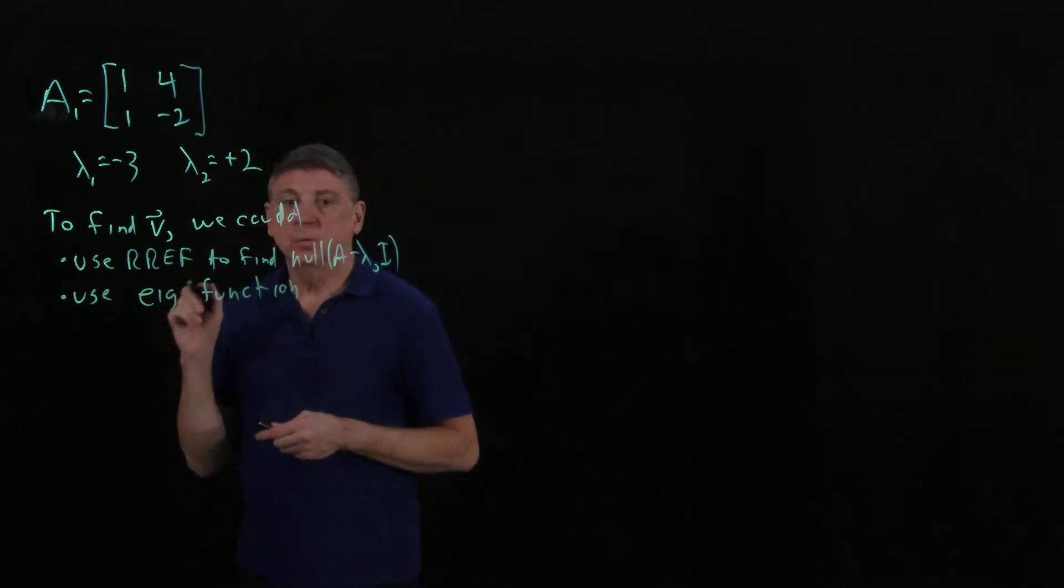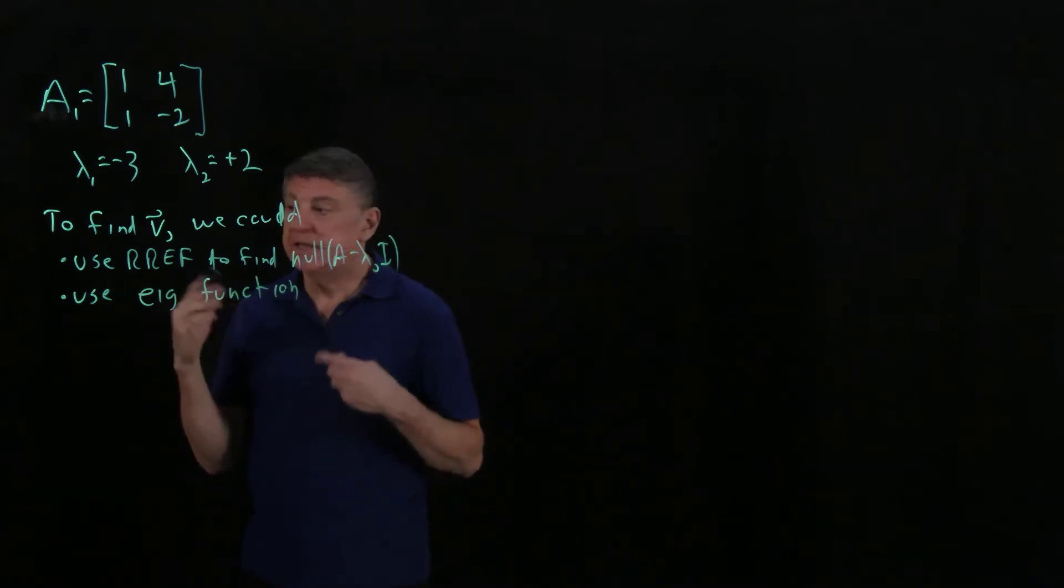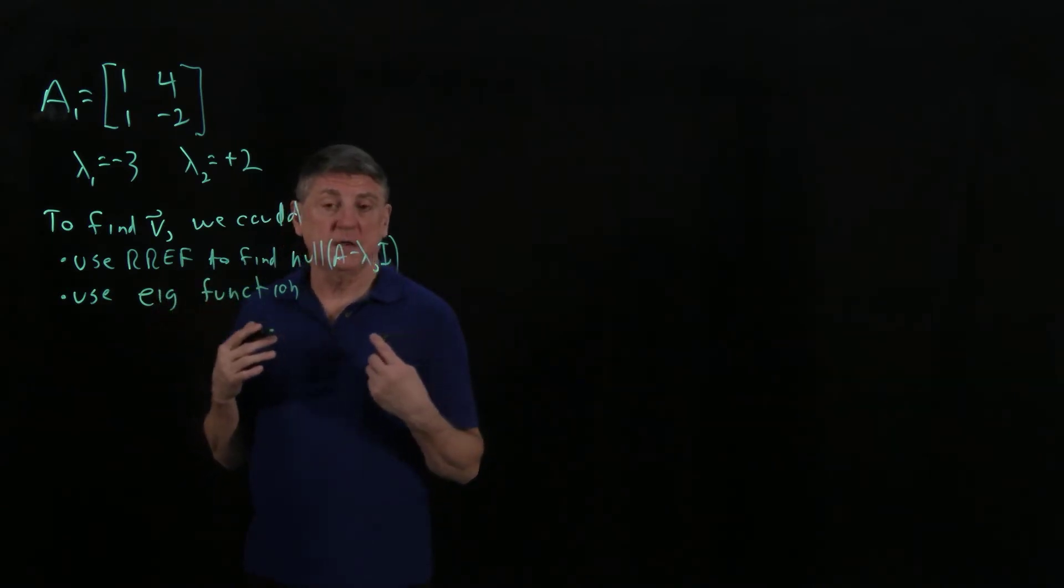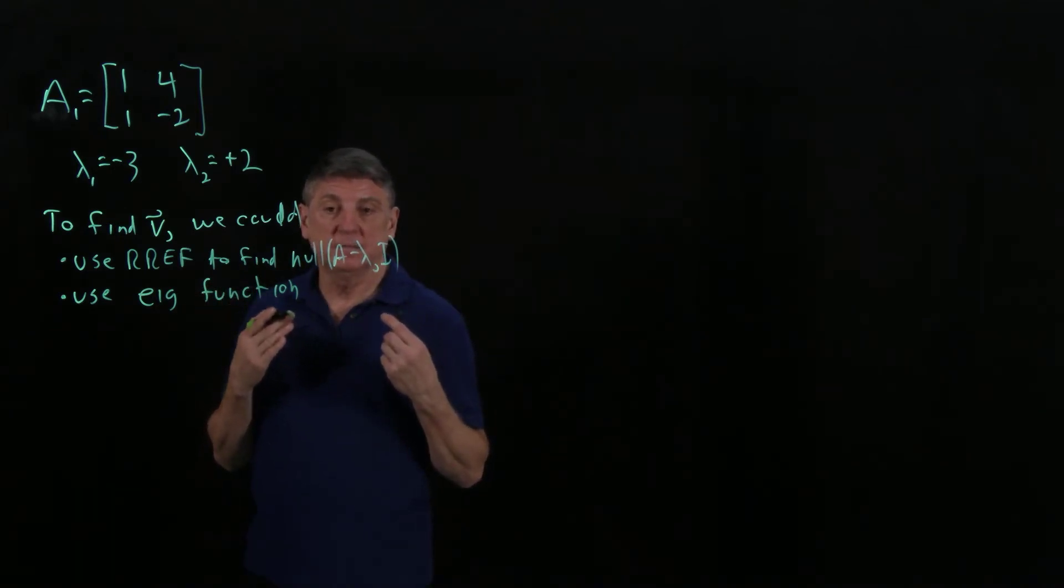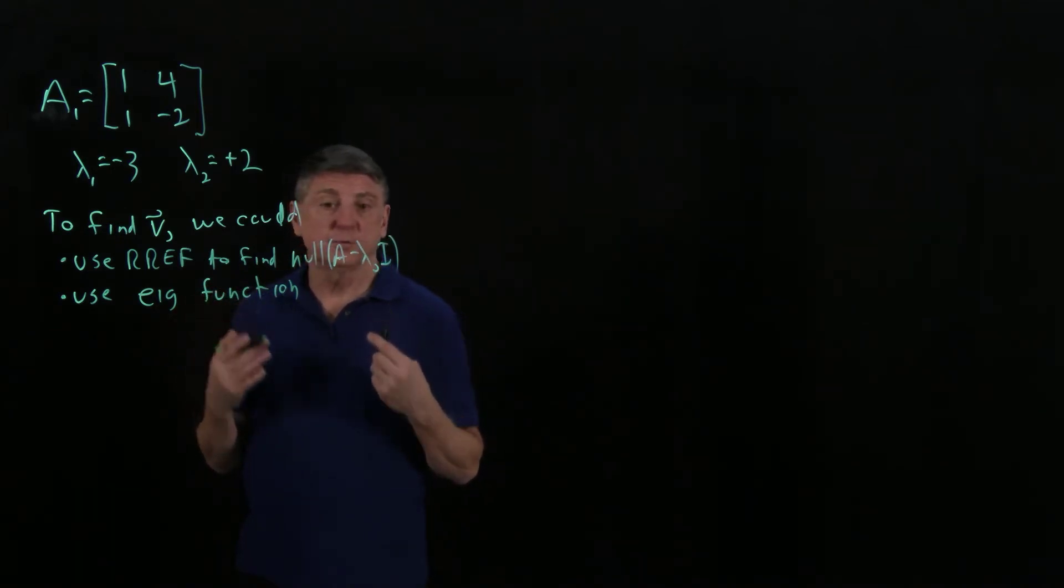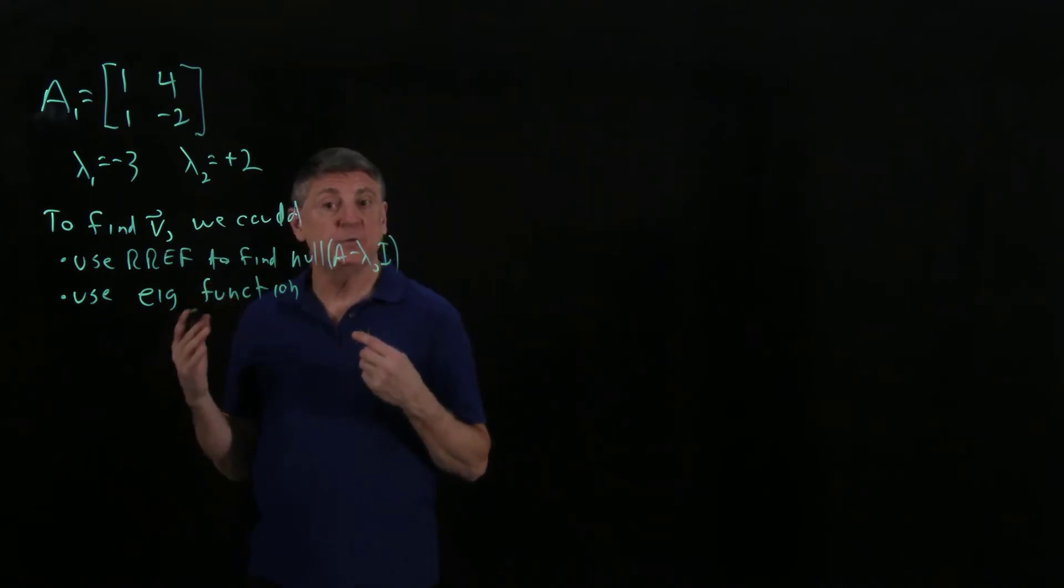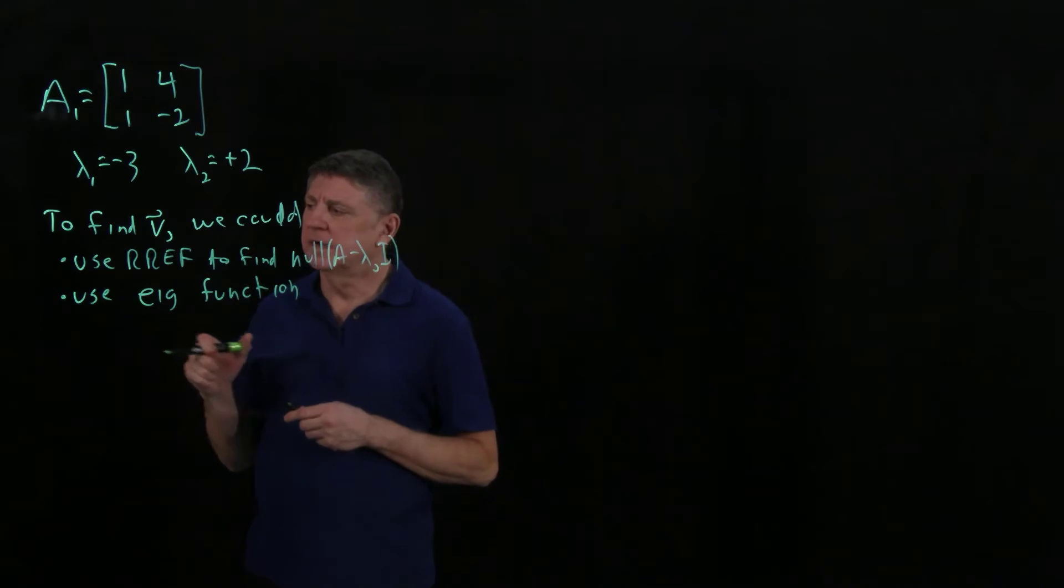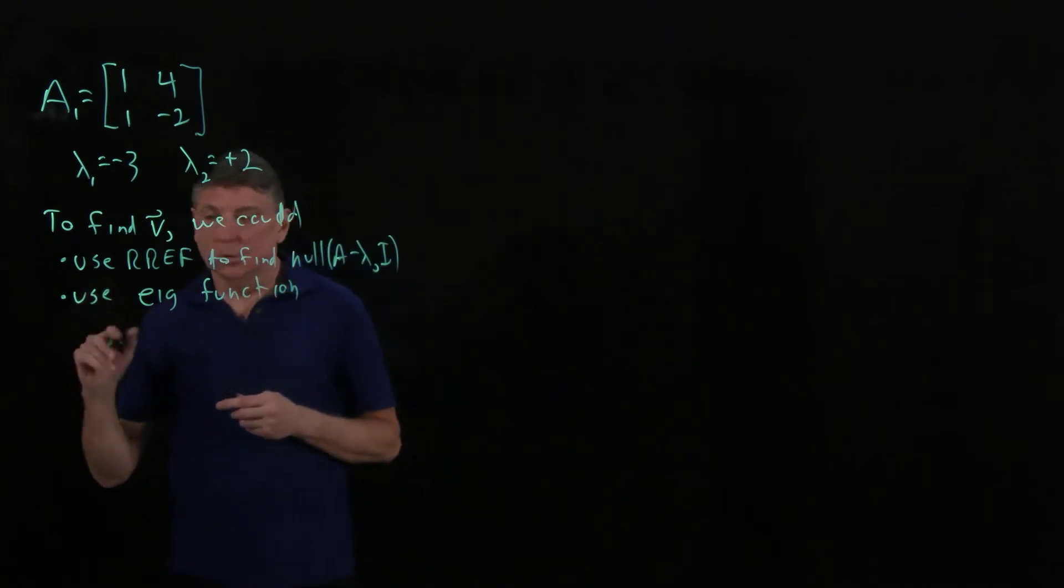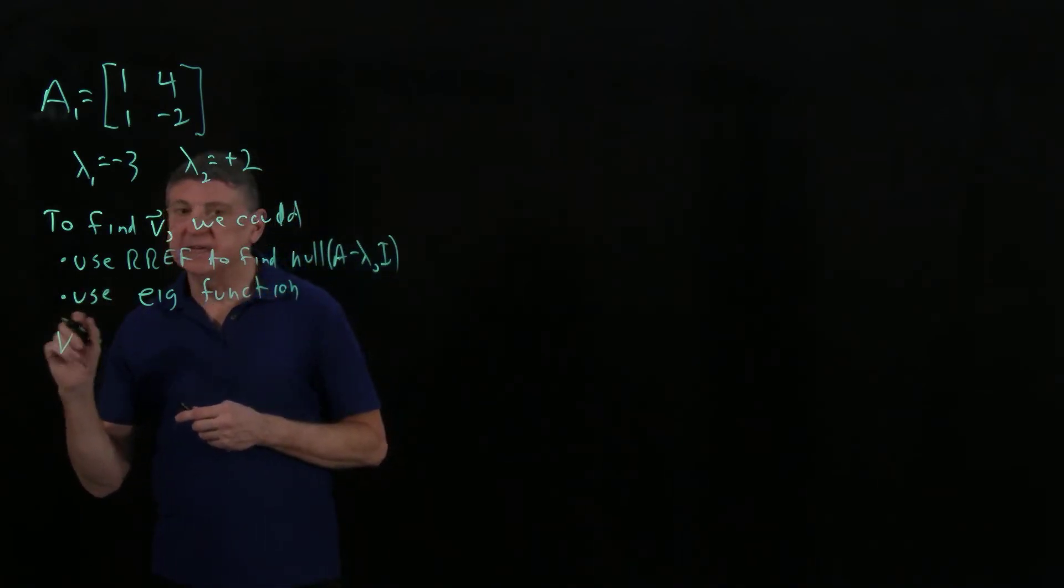When you use the eig function, there's a way to call it where it will return two distinct arguments, and those return arguments are the eigenvalues and the eigenvectors. It's worth reading the documentation on the eig function. It can be one of your friends.